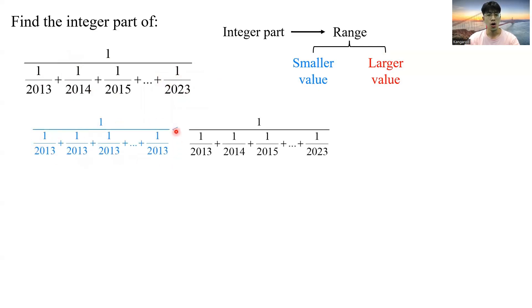And this is very easy to calculate. And what is a slightly larger fraction than this? That is just 1 over 2023 or until the last fraction is also 1 over 2023.